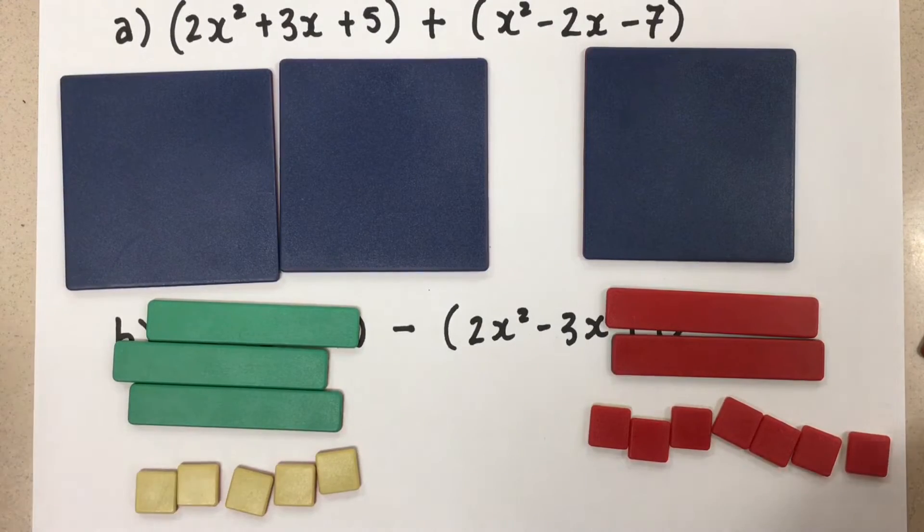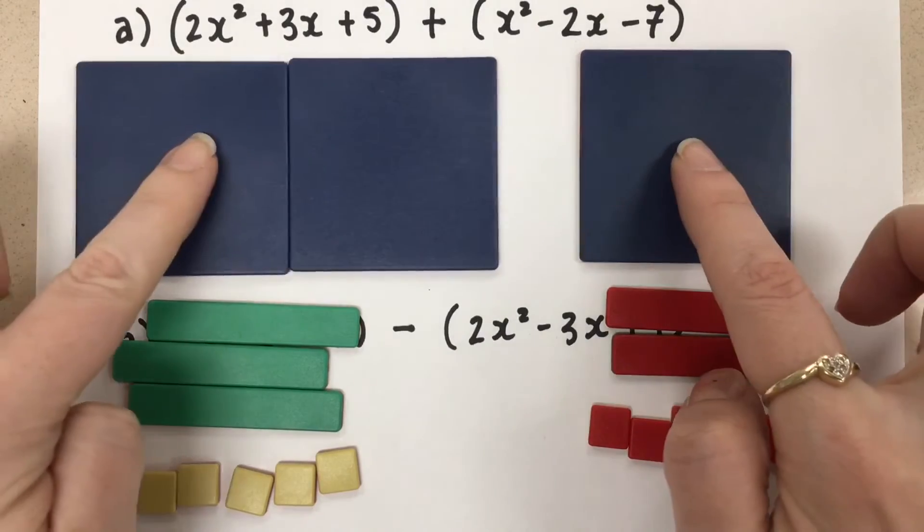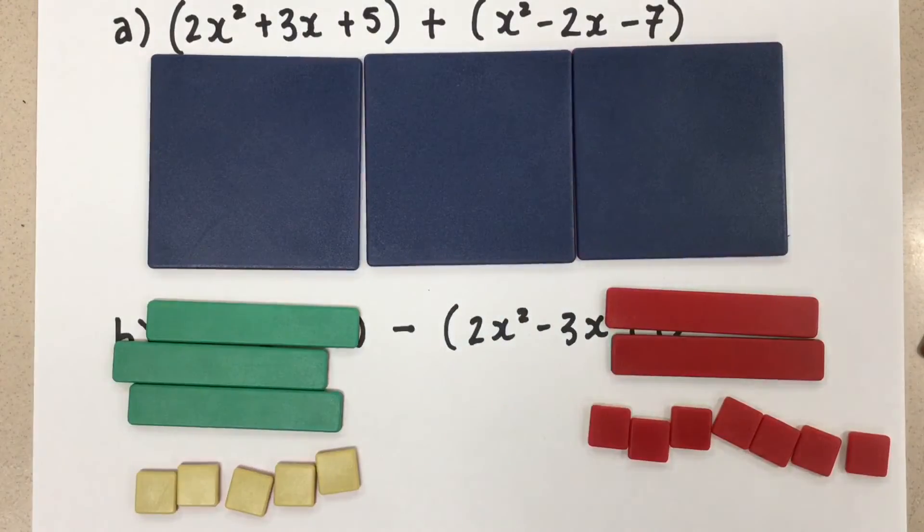Okay, if we want to add these together, it's just a matter of combining these groups together. If we combine them together, what do we have? Well, we have 3 x squareds. That's it.